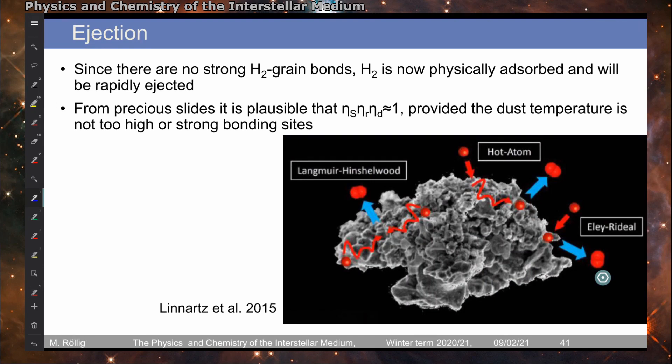So we saw from the timescale estimates that the probability for hydrogen atoms to meet on a grain surface are basically unity. The probability for desorption is also very high because we have a lot of binding energy being released and some of it will be available to overcome the binding to the surface. And so provided that the dust temperature is not too high or strong, it is very plausible that this product is in the order of unity.